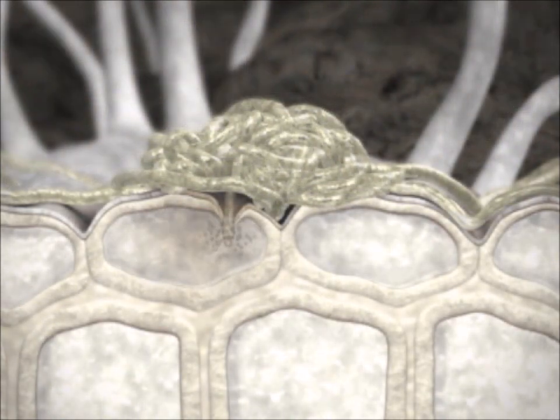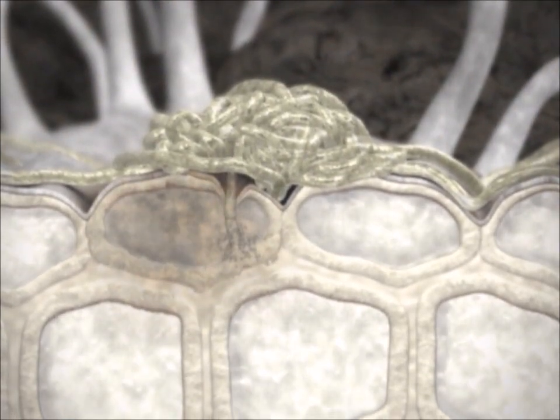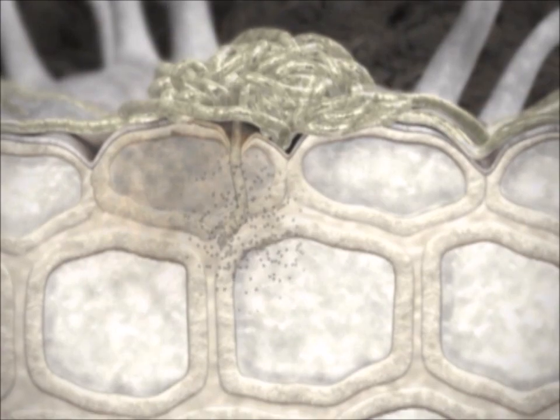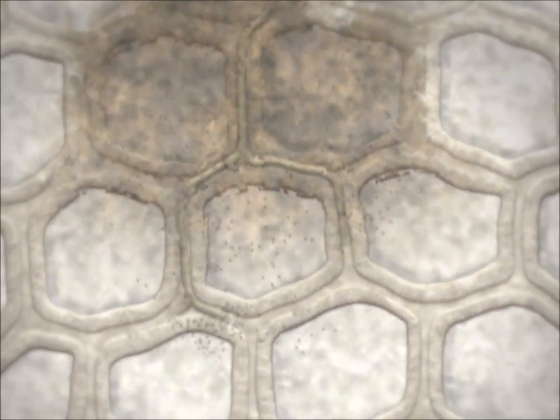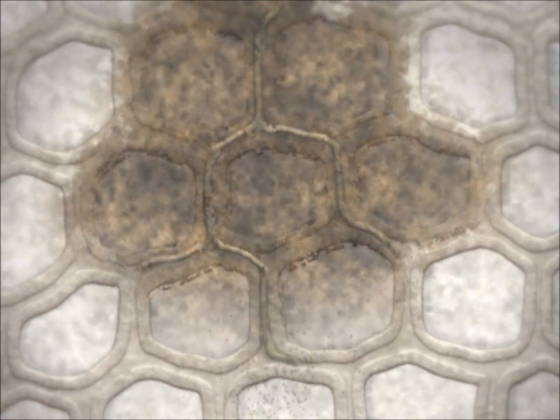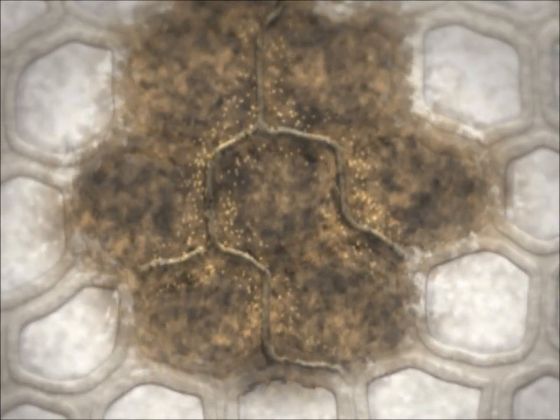From this infection cushion, hyphae grow downward. With the aid of enzymes, the fungus destroys the intercellular cement. Gradually, the root tissue dissolves. The resulting macerated cells provide a rich habitat for the fungus.